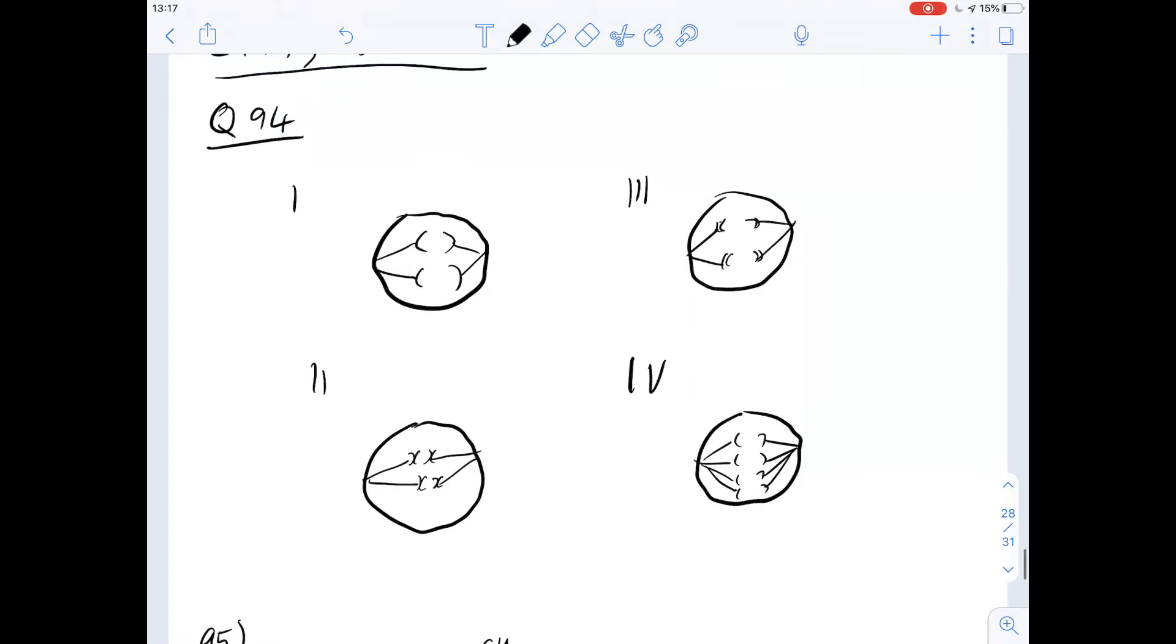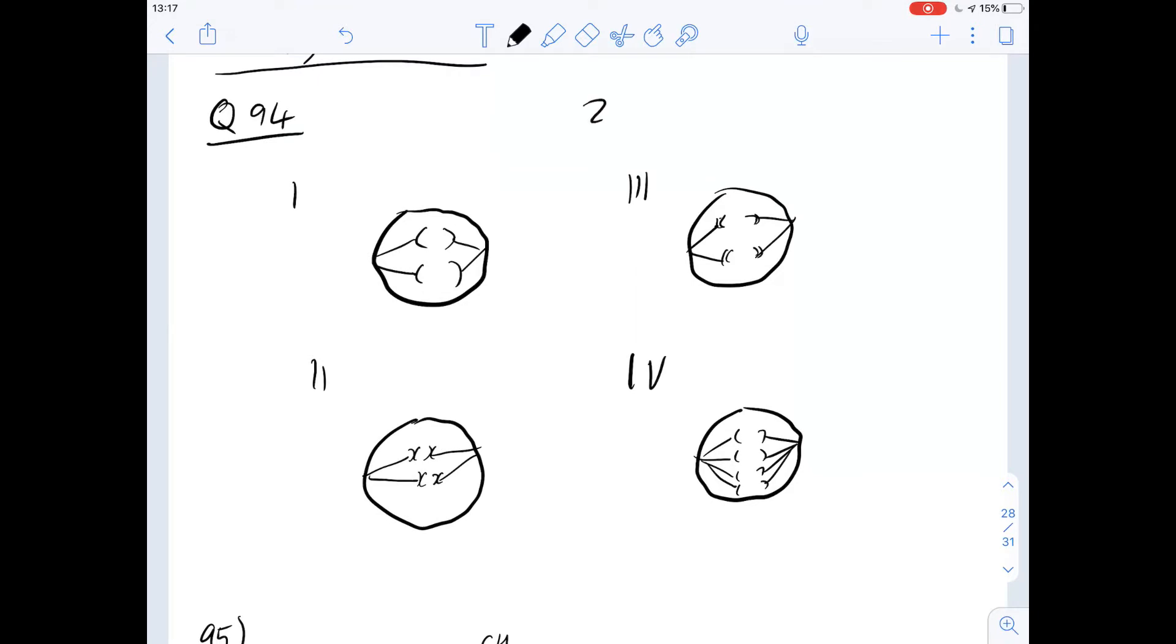So given that it's a diploid cell, so 2n equals 4, this tells us that because we've only got four single chromosomes here instead of in their pairs, this is going to be anaphase 2.